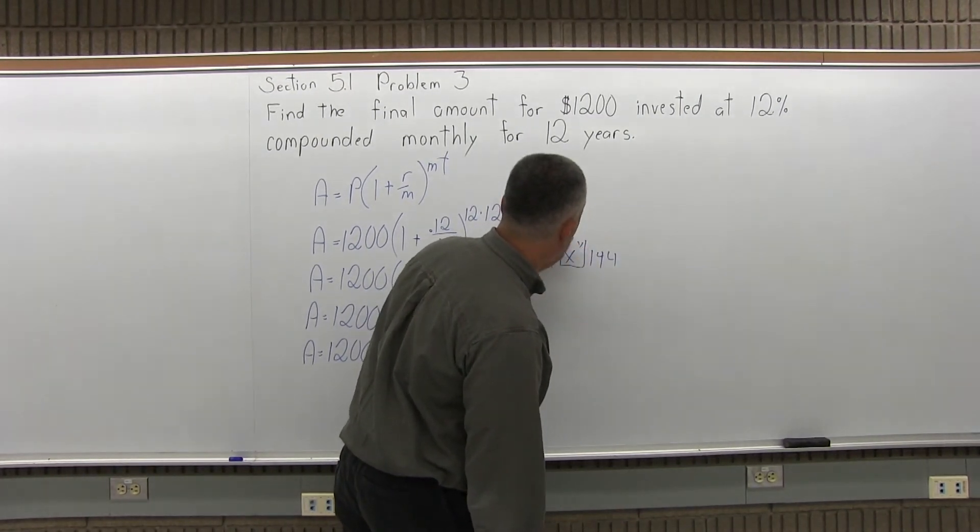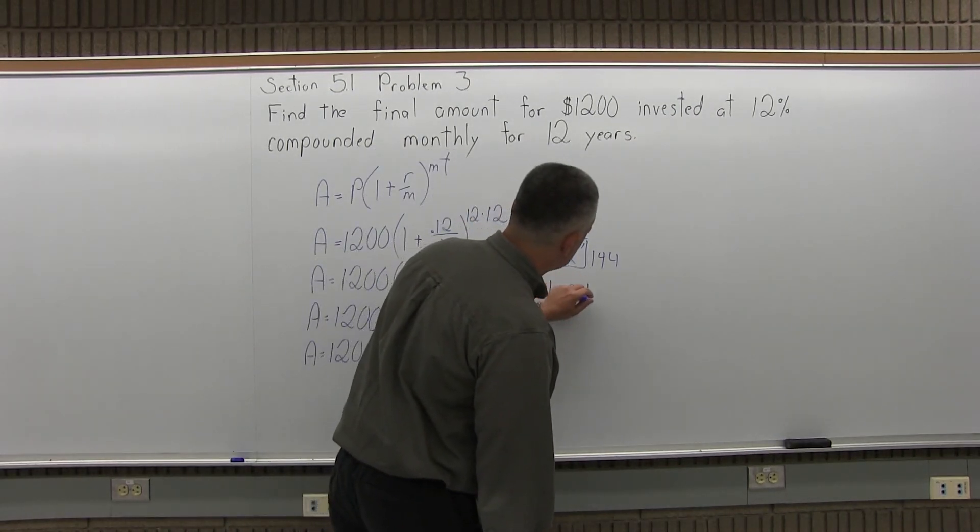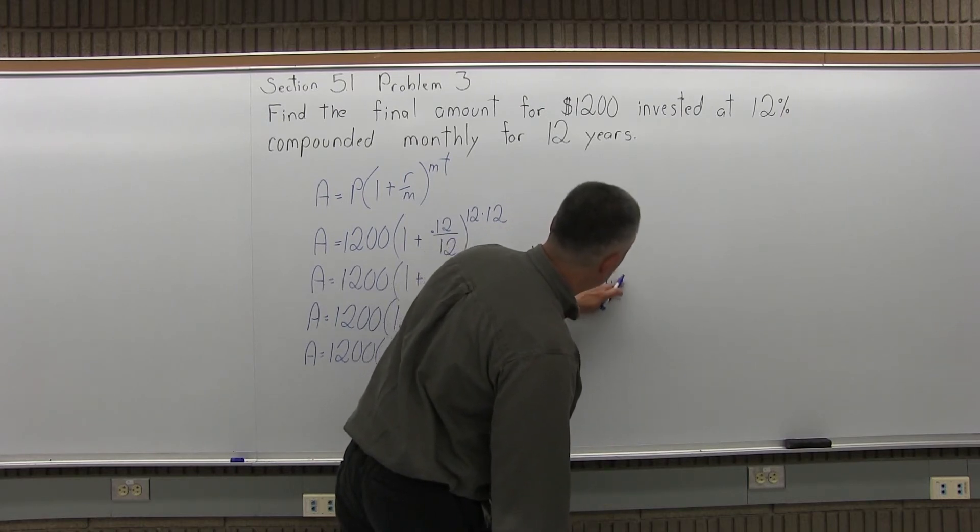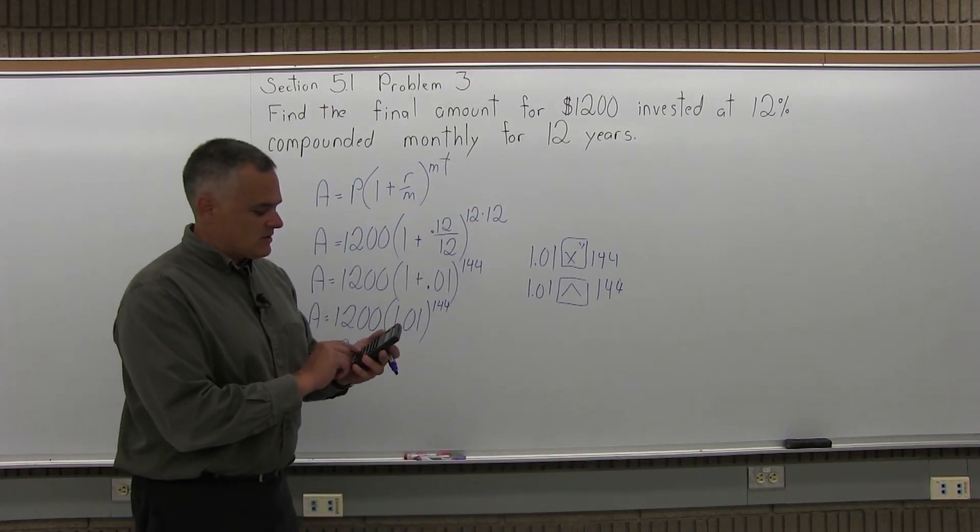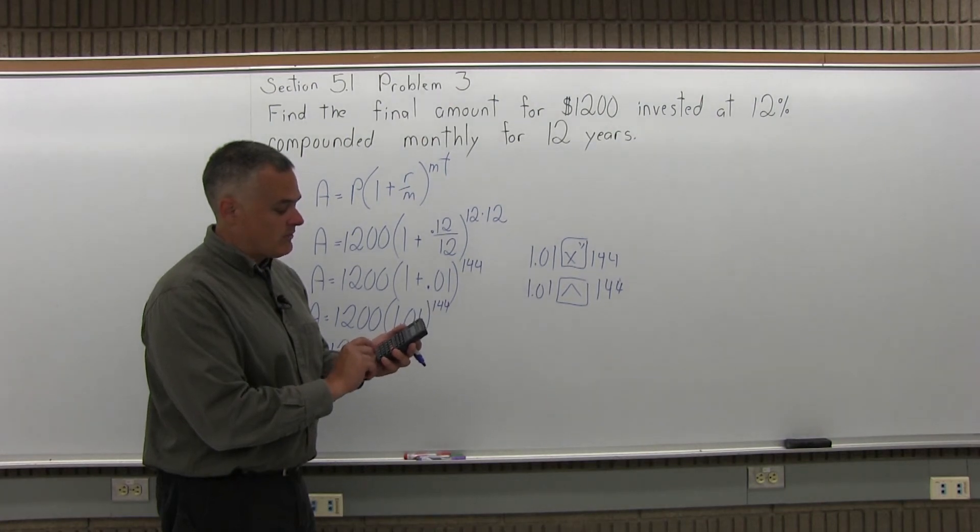It's an X with a little superscript of a Y. Some calculators, it's what they call a carat, it looks like an arrow pointing up. So let me use my calculator to get that answer.